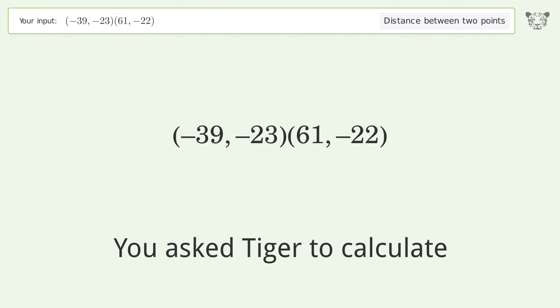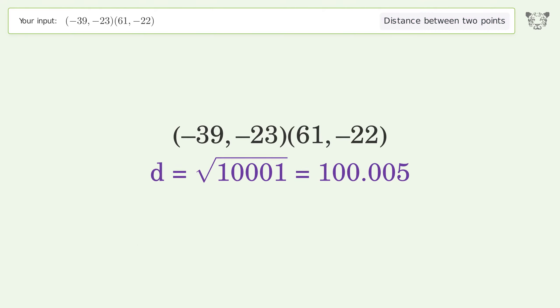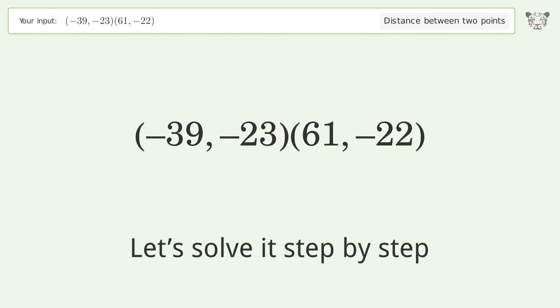You asked Tiger to calculate the distance between two points (-39, -23) and (61, -22). The distance between the two points is the square root of 100001, or 100.005. Let's solve it step by step.